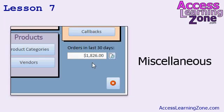In lesson seven, we're going to talk about a couple of miscellaneous items. We'll learn about the expression option in aggregate queries. We'll make a box on your main menu showing the orders in the last 30 days using the DSum function, and make a button to refresh that value manually. I will also give you your homework assignment for the next class.